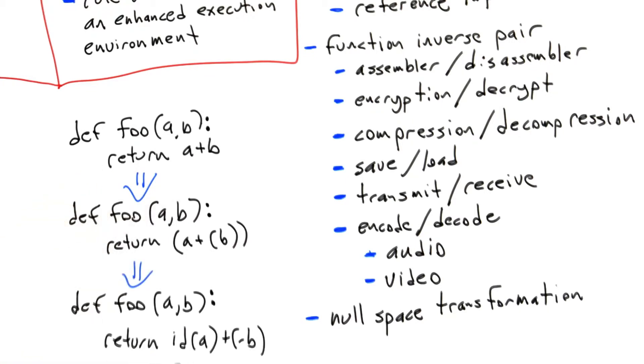So of course we could always do things even more elaborate. So here we're calling some sort of an identity function on a, that is to say some function that is guaranteed to return the same value of a that it's called with, although of course that's not going to be apparent to the interpreter. And then instead of adding b to a, we're going to subtract minus b from a, so another little null space transformation.